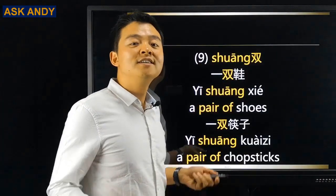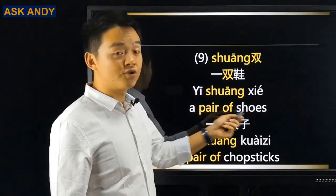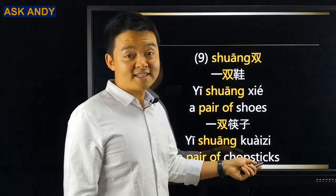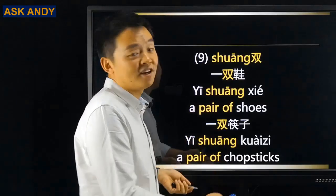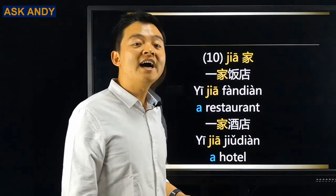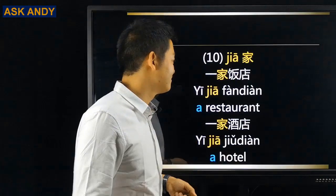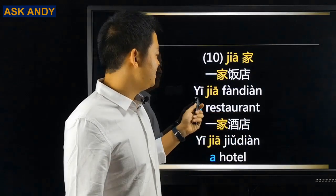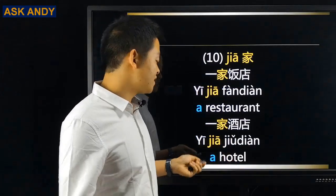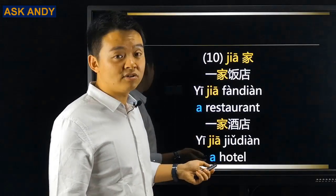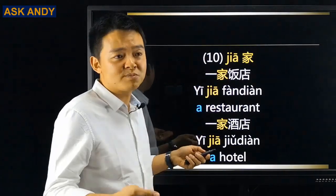Number nine: 双. For example, 一双鞋 — a pair of shoes. And 一双筷子 — a pair of chopsticks. This one is similar to English. Number ten: 家. You may know 家 means 'home' as a noun, but it can also be a measure word. For example, 一家饭店 — a restaurant, and 一家酒店 — a hotel. So 家 is the measure word for business places like shops.